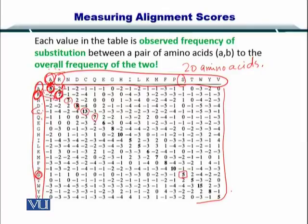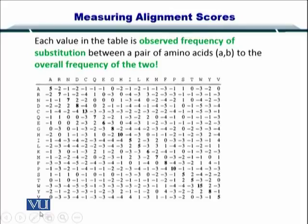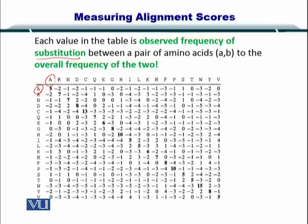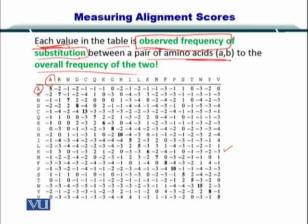You can see that certain amino acids have a very high score for conservation. The point is that for substitution from one amino acid to another, you can use this score rather than a flat plus 10 for a match. This substitution matrix has several values, and each value in the table is the observed frequency of substitution between a pair of amino acids relative to the overall frequency of the two.